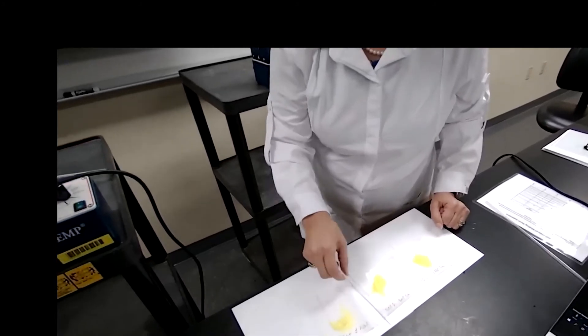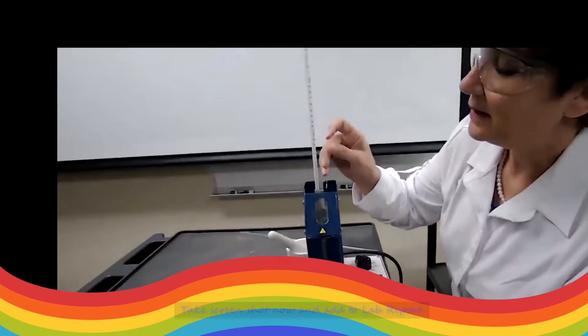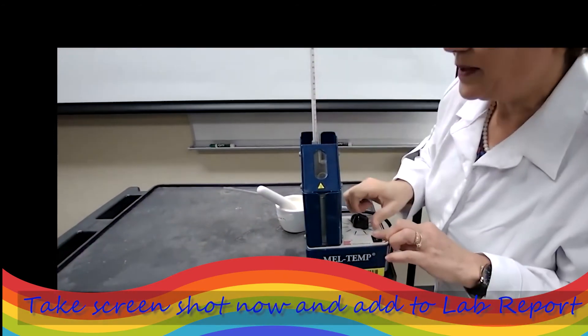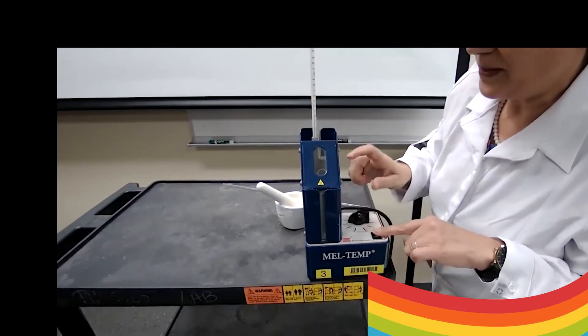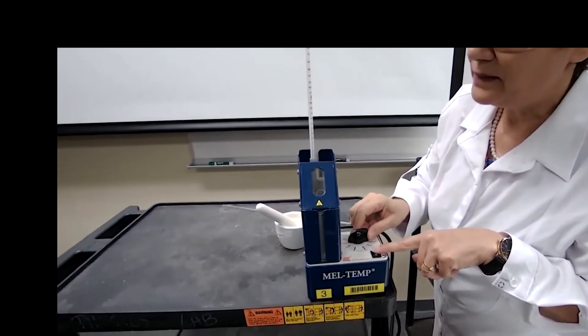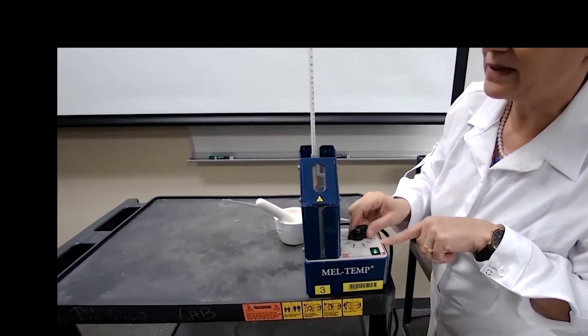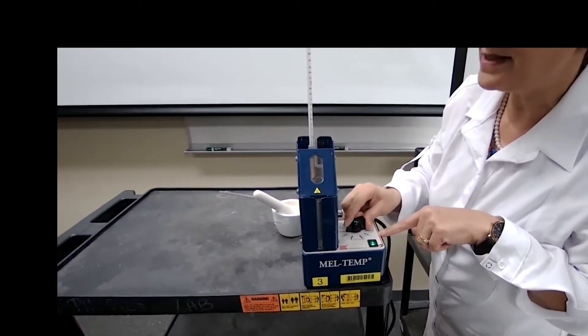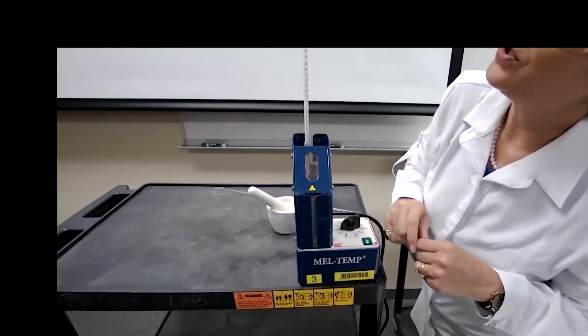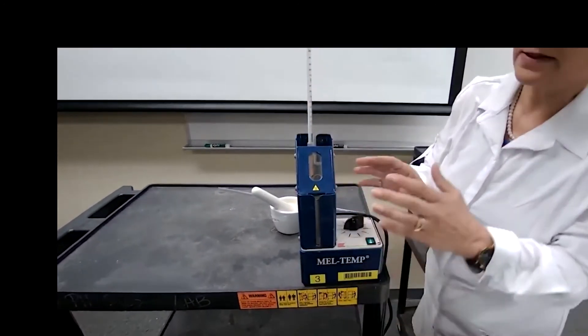I'm going to take the 50-50% first and I place it in the melt temp, turn it on. We are going to set it at low because fluoranone melts at 84, with the impurities it's going to be even less. So let's do it at less than two. I will show you a picture when it starts melting or when it is melted completely.